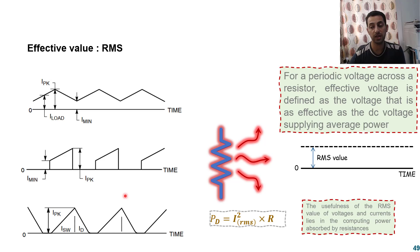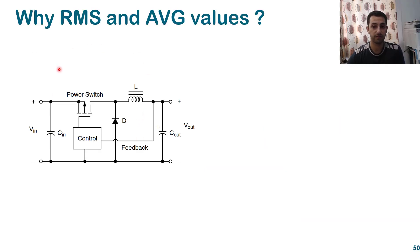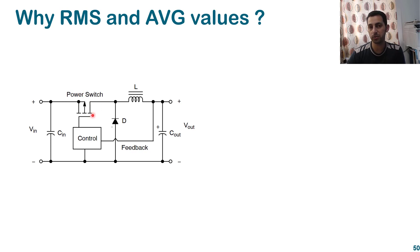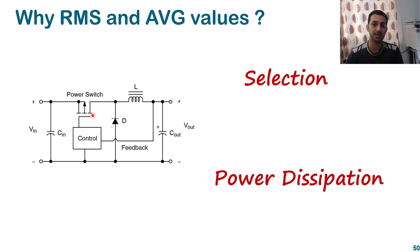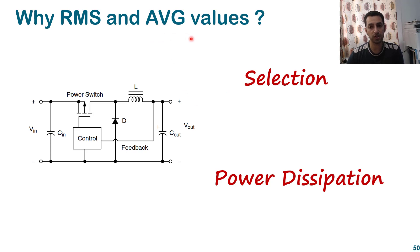Once you know the RMS value, you can confidently specify the effective current through an inductor or a diode or a switch, calculate power dissipation, and select components. There are two key benefits: first, component selection — you cannot focus only on peak or average values because some signals have zero average — and second, computing power dissipation accurately.